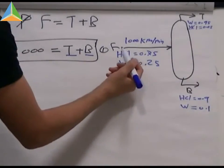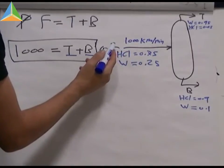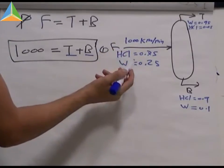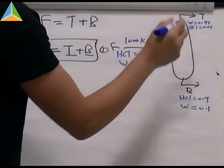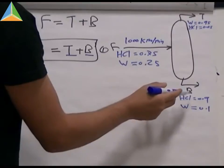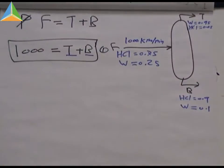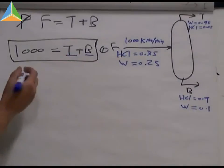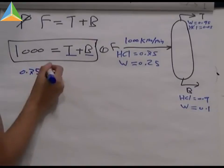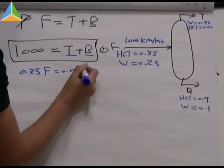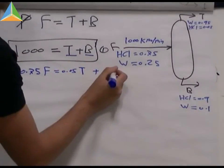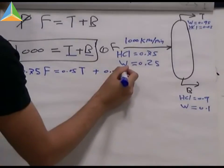The amount of HCl in the feed stream is equal to the amount of HCl in the top product plus the amount of HCl in the bottom product. So 0.75 times F equal to 0.05 times T plus 0.09 times B.